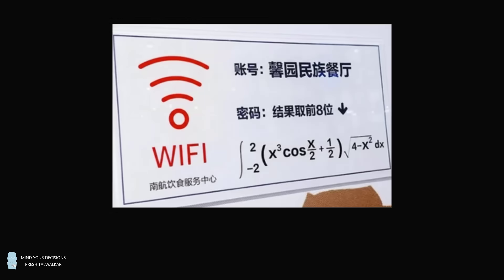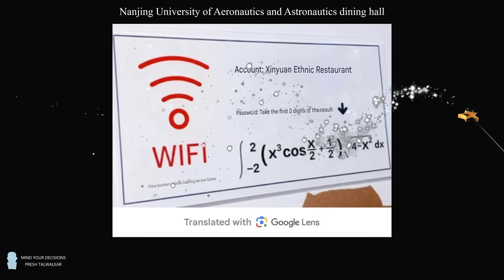Hey, this is Presh Talwalkar. In 2018, a mysterious sign captivated the internet and it still makes the rounds from time to time every year. This photo was taken in the dining hall of the Nanjing University of Aeronautics and Astronautics in China. We sprinkle a little magic dust, we can understand what the question is asking.